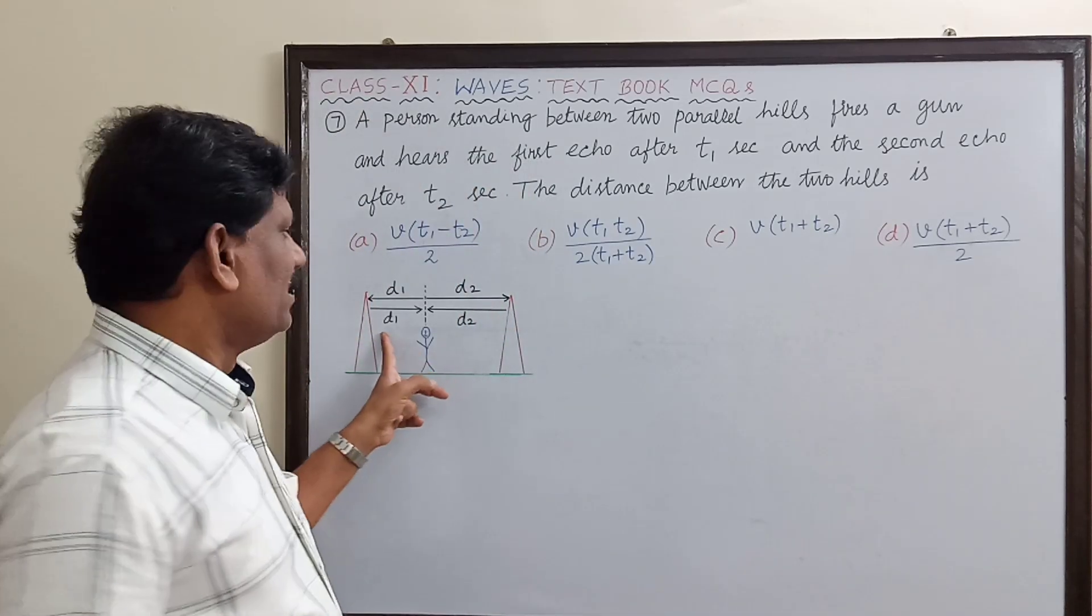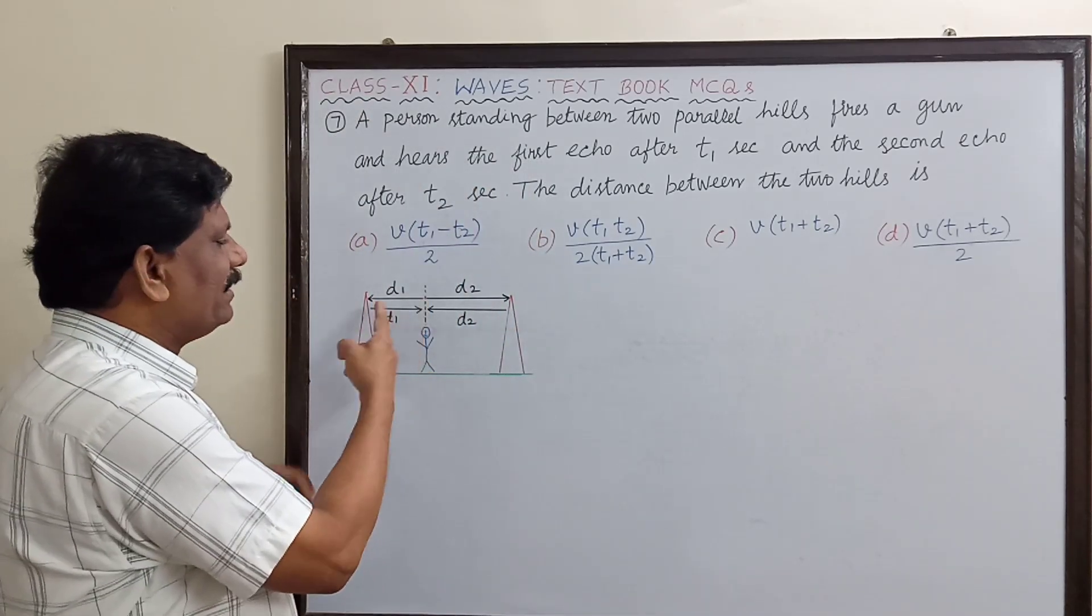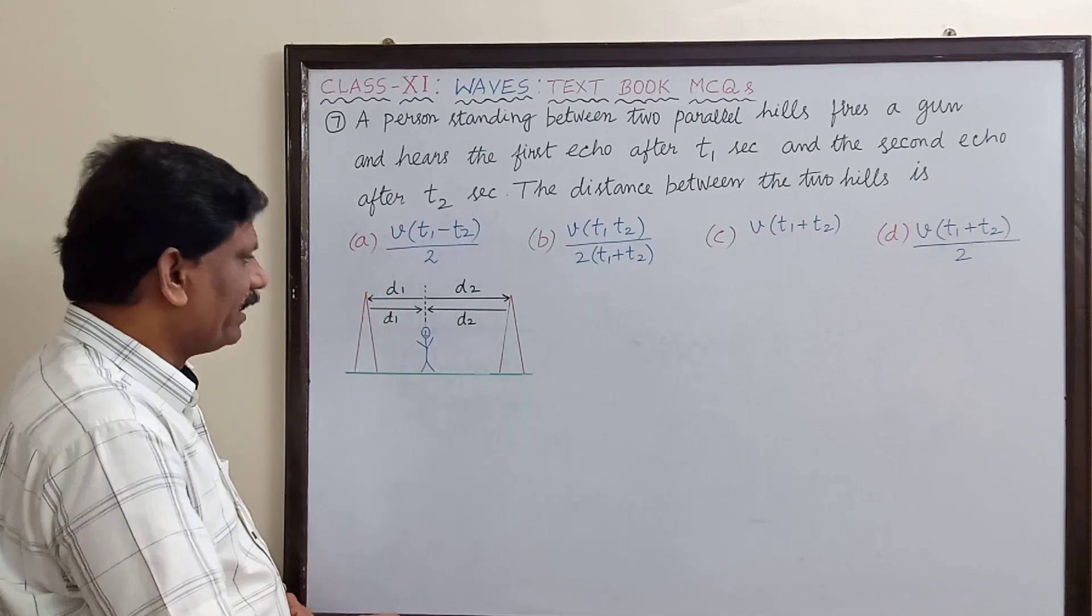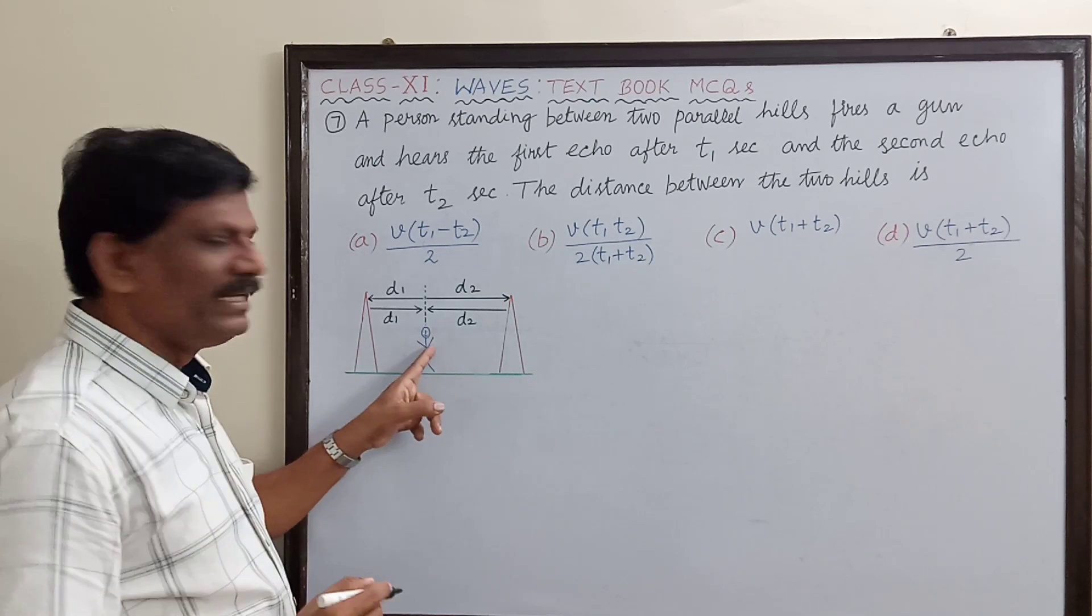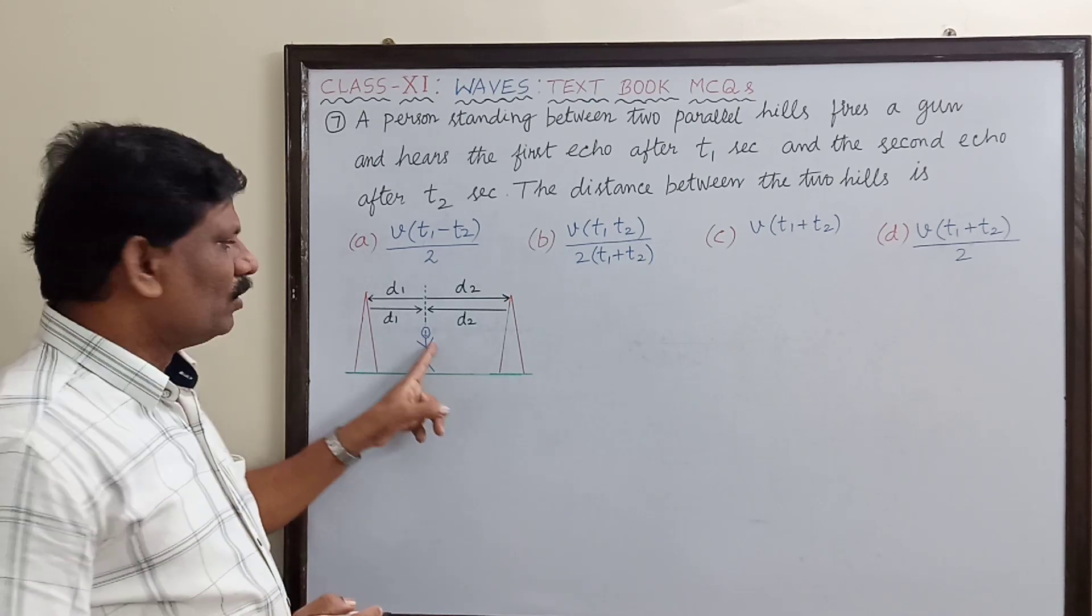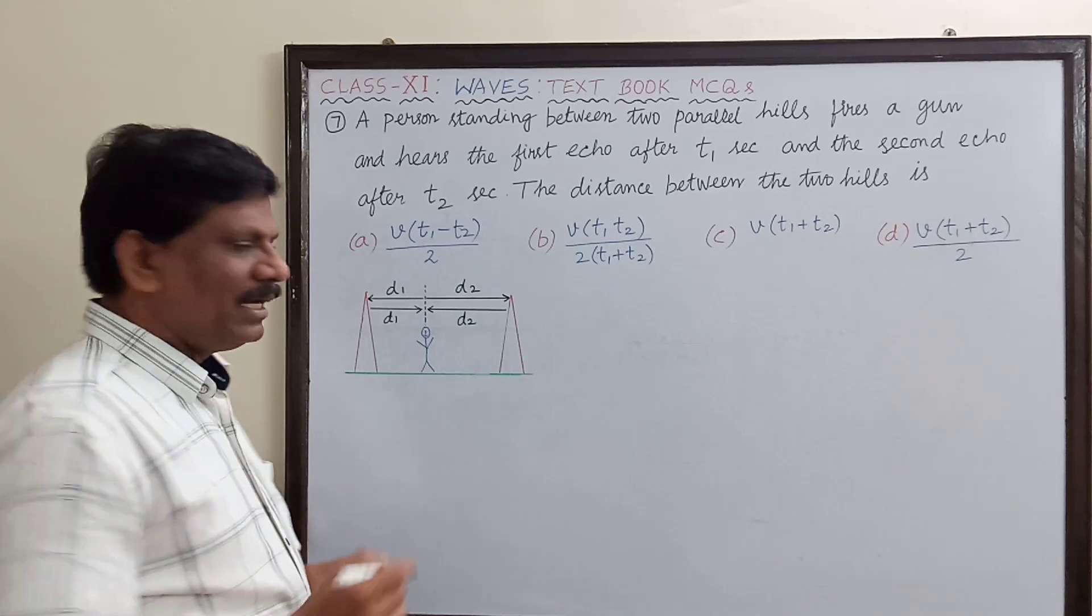The sound travels a distance d1 from him up to the hill, then again it returns the same distance d1 to reach that person. So what is the distance traveled by the sound on hill number one?